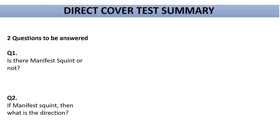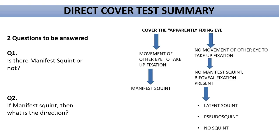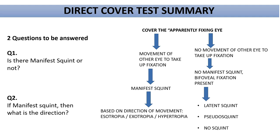To summarize the direct cover test: we cover the apparently fixing eye. If there is movement of the other eye to take up fixation, manifest squint is present; if there is no movement, there is bifoveal fixation — either latent squint, pseudo squint, or no squint. Exceptions include blind eye, total muscle paralysis, or eccentric fixation, which must be excluded. For the direction: outward movement of the uncovered eye means esotropia; inward movement means exotropia; downward movement means hypertropia. The direction of movement is opposite to the direction of squint.